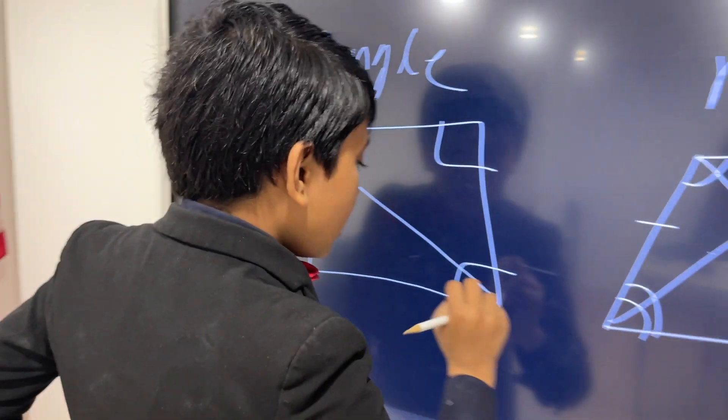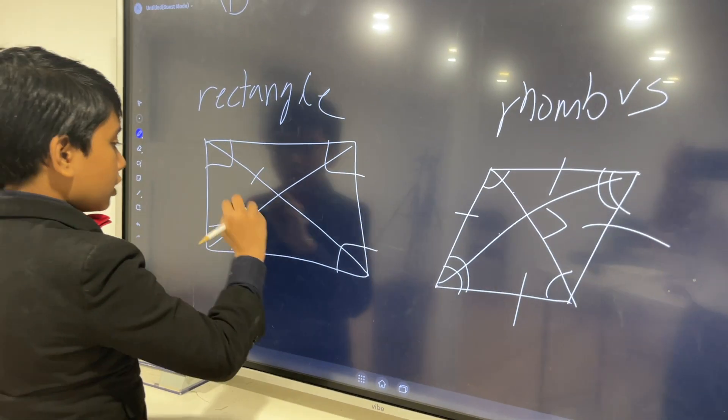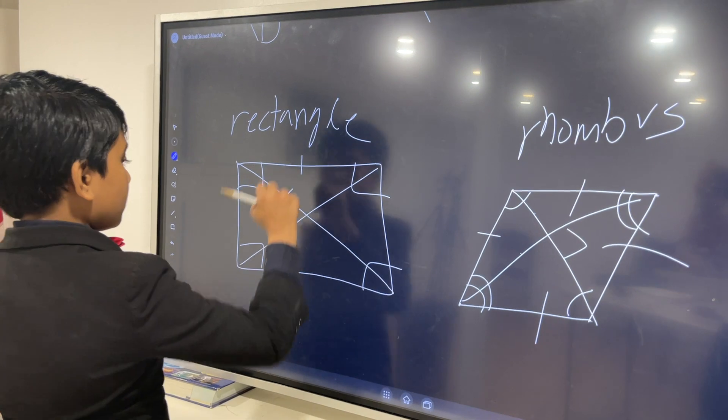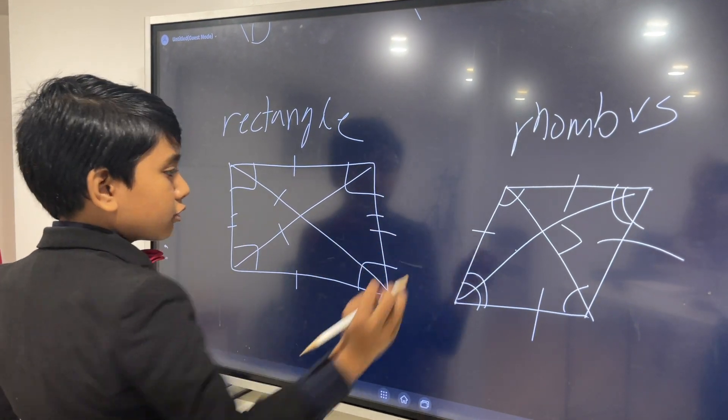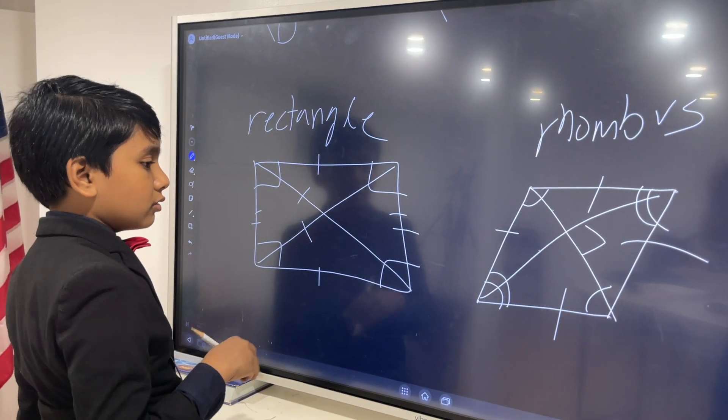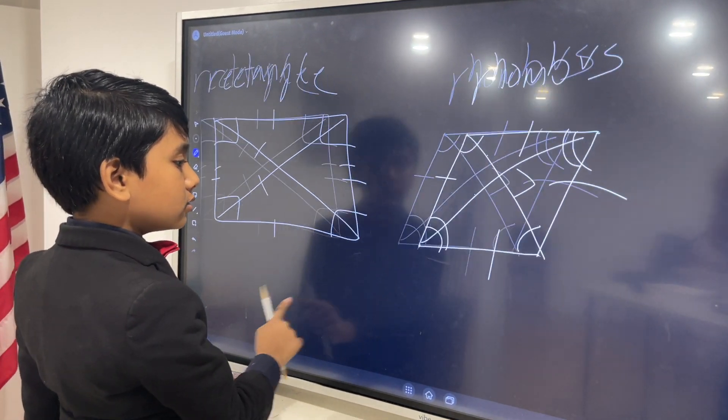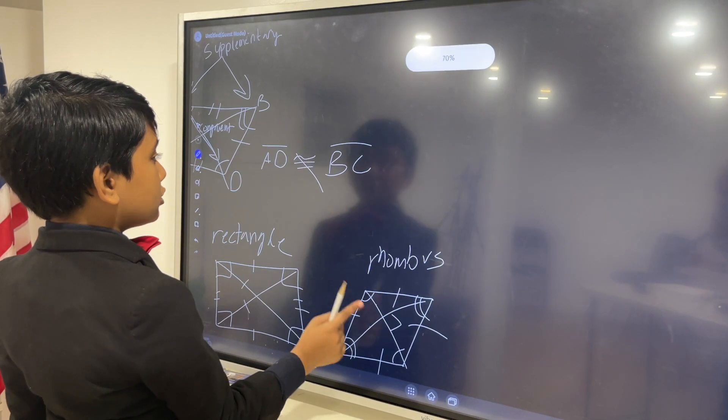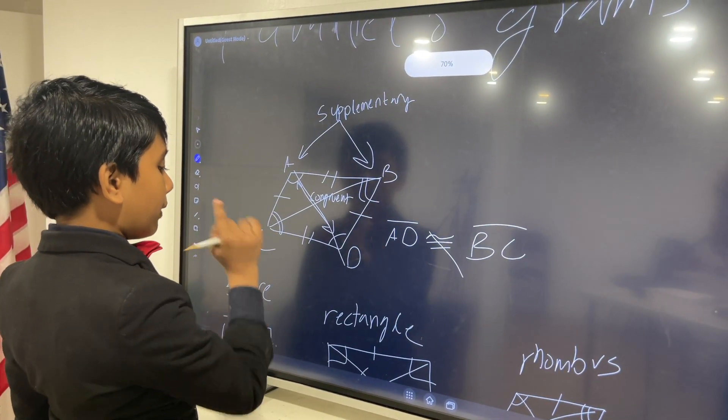Now, their diagonals are congruent, and opposite sides are congruent for them. However, their diagonals are not perpendicular, and they don't bisect the angles. However, they do bisect the angles for the rhombus and for our parallelogram.